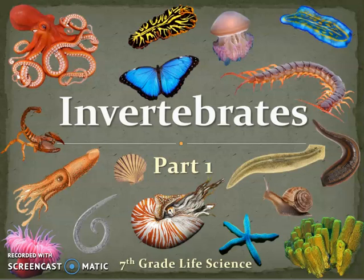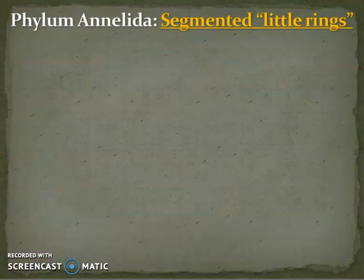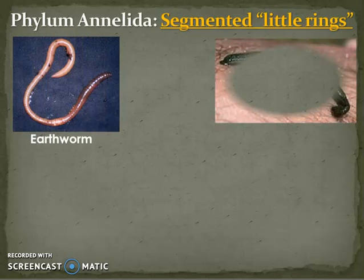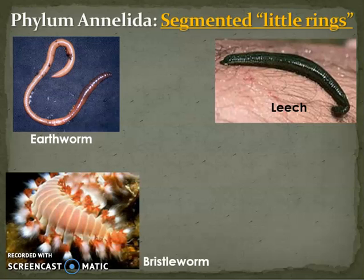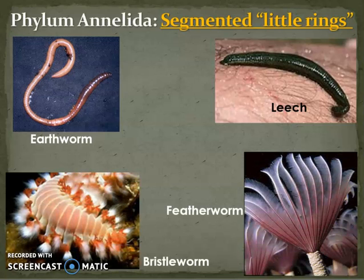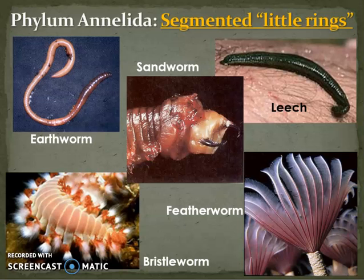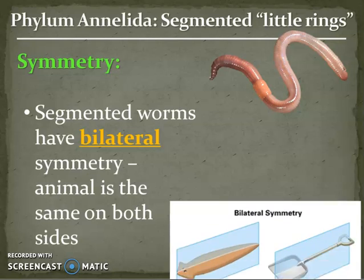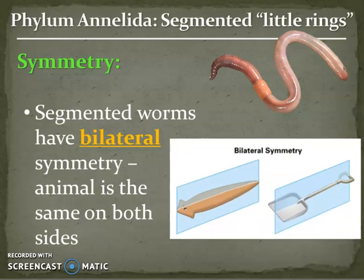And finally, our last group of worms. They are called our annelids, or Phylum Annelida, meaning 'little rings,' because these are worms that are made up of a whole bunch of different little rings - such as earthworms, leeches, bristle worms, feather worms, or even sandworms. Our annelids also have bilateral symmetry, meaning you can cut them right down the center and you will have two even parts.